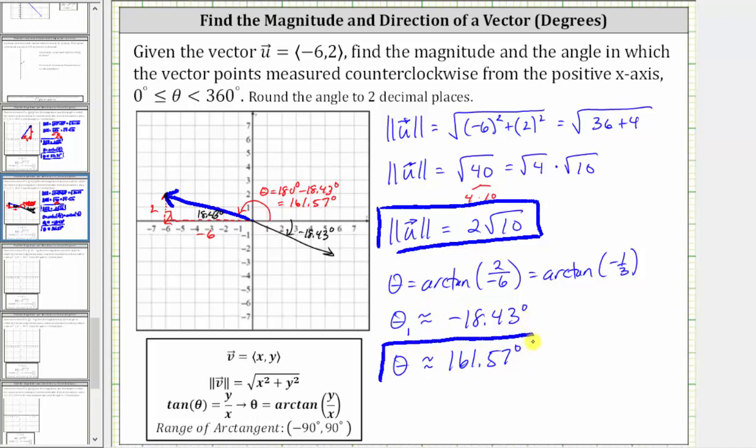So in determining theta, it is important to make sure the angle terminates in the correct quadrant, and that it's in the given interval. And that's why it's important to always sketch the vector in standard position. I hope you found this helpful.